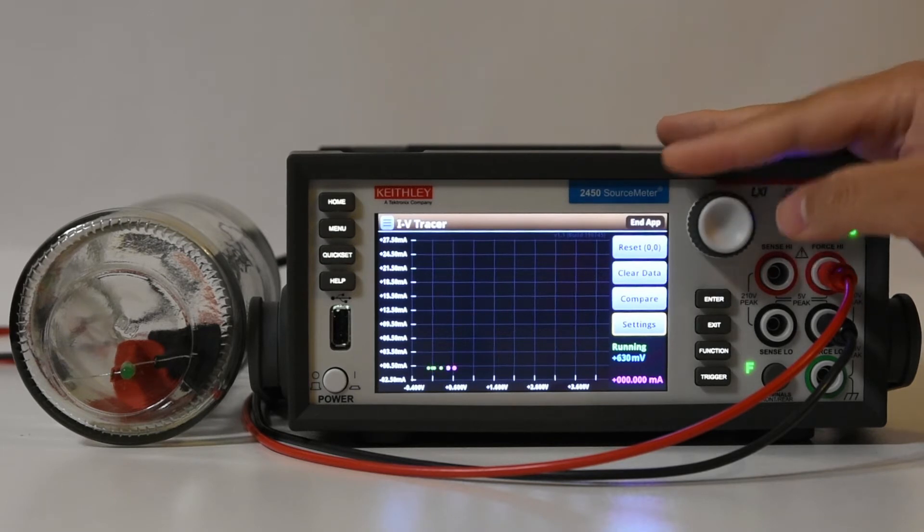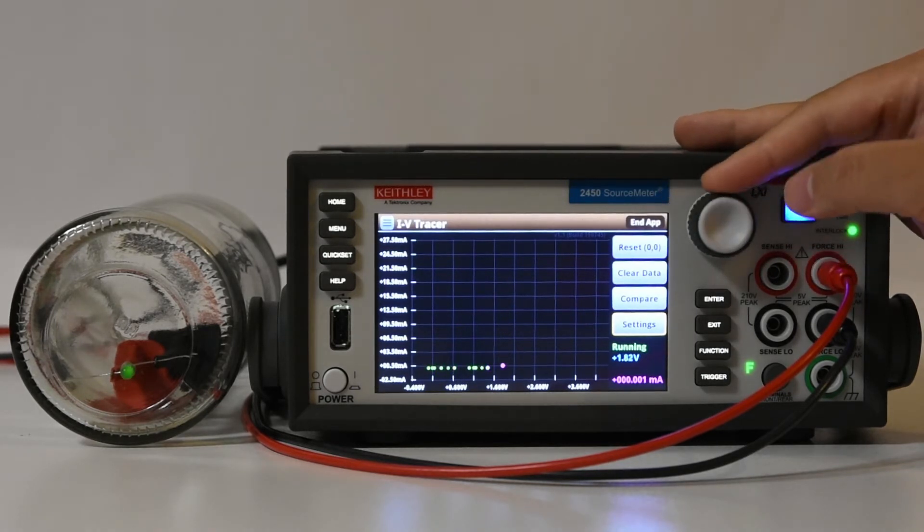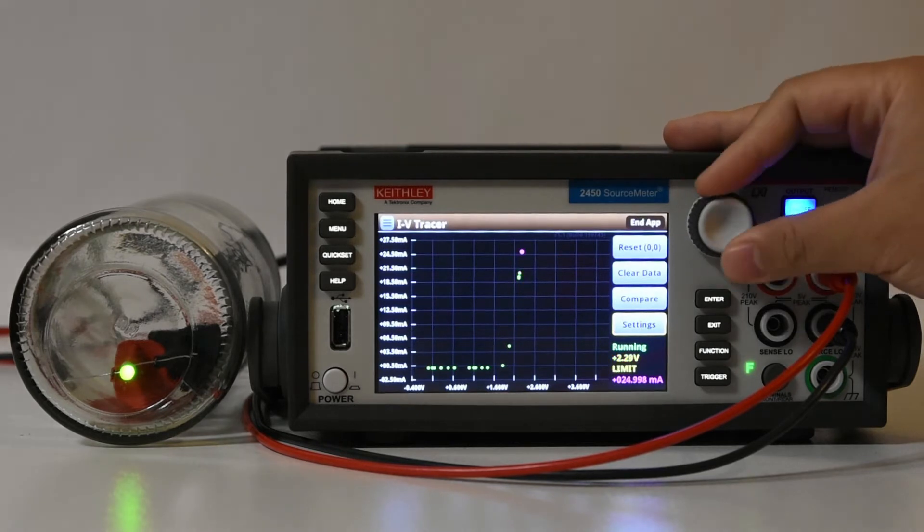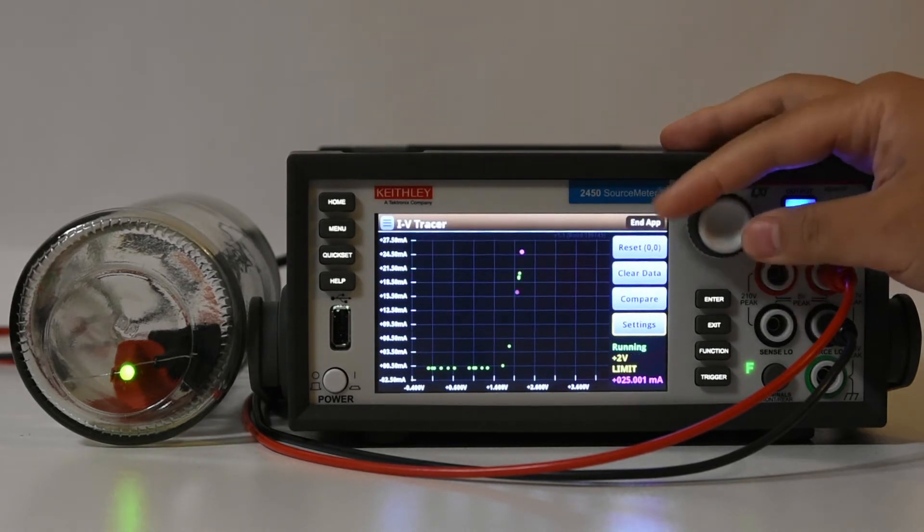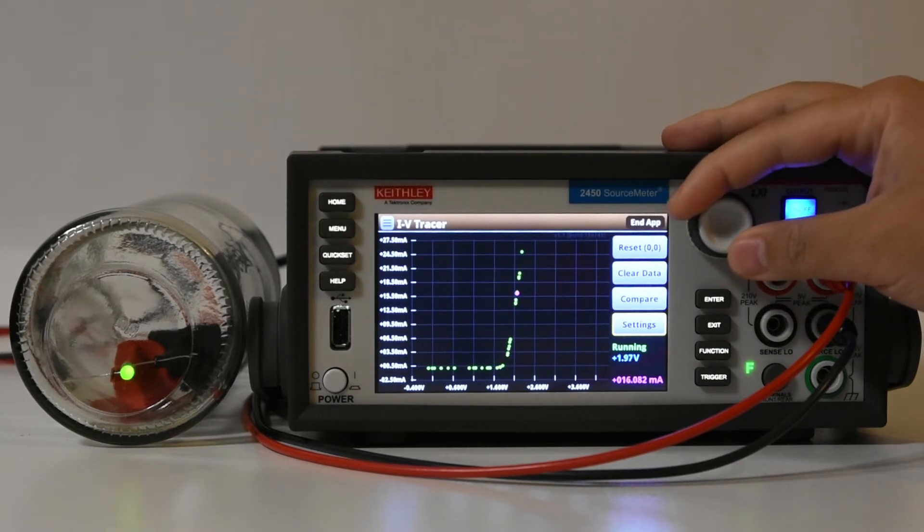Running the app recalls a setup I have saved as a default for tracing an LED. Turning the output on, the trace can be made by rotating the knob, where each step is plotted as a dot, and the step size is dependent on how quickly the knob is rotated.